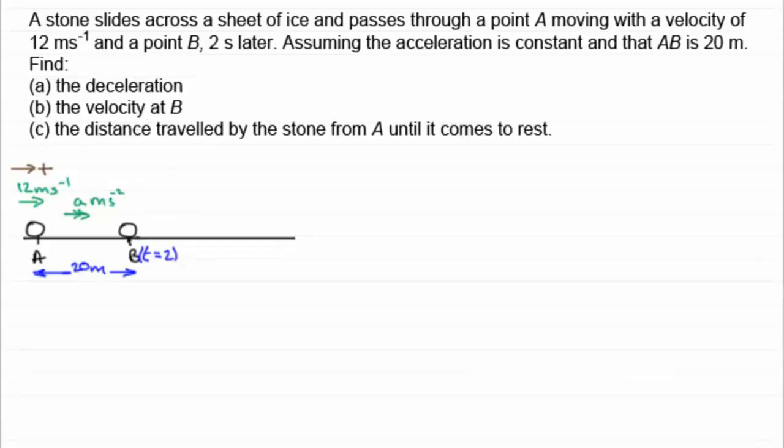So to start off, because we're dealing with constant acceleration, I can write down my values for S, U, V, A and T. And what are those values? S is the displacement, U the initial velocity, V the final velocity, A the acceleration and T the time. We know that it's 2 seconds. S is going to be 20 meters. It will be the same as the distance traveled because it's moving in the positive sense.